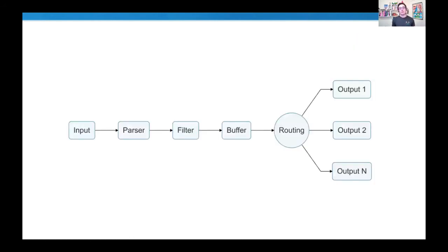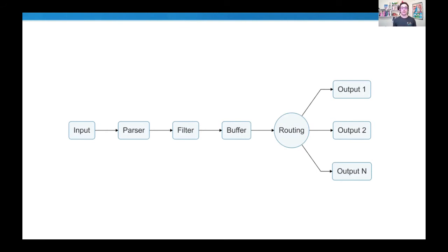From a data workflow perspective, it's very similar to Fluentd. We have an input section where we collect data. We have parsers to parse the data and convert from unstructured format to structured format. We have the filtering phase for data enrichment — for example, in Kubernetes you need to enrich your data with metadata like labels and annotations. We have buffering sections and routing mechanisms to send your data to one or many destinations, all configured by plugins.